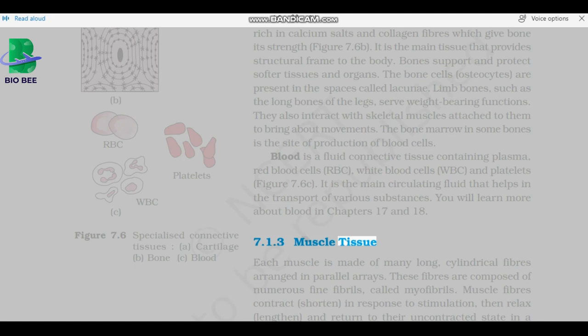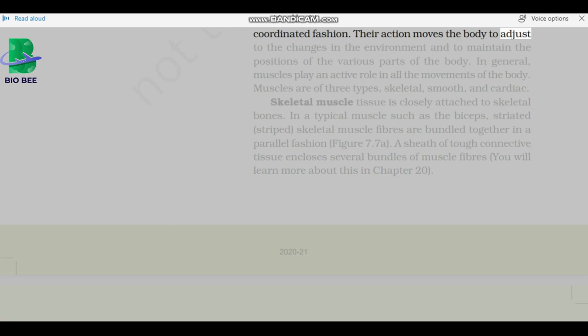Muscle tissue: Each muscle is made of many long, cylindrical fibers arranged in parallel arrays. These fibers are composed of numerous fine fibrils, called myofibrils. Muscle fibers contract, shorten, in response to stimulation, then relax, lengthen, and return to their uncontracted state in a coordinated fashion. Their action moves the body to adjust to the changes in the environment and to maintain the positions of the various parts of the body. In general, muscles play an active role in all the movements of the body. Muscles are of three types: skeletal, smooth, and cardiac.